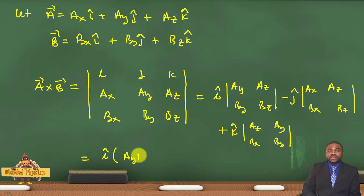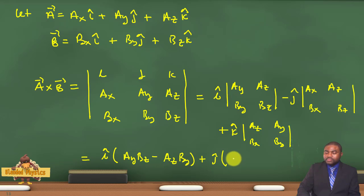And you can further simplify that to become: i bracket Ay Bz minus Az By, plus j bracket Az Bx minus Ax Bz, plus k bracket Az By minus Ay Bx.